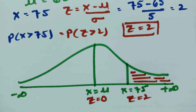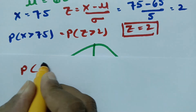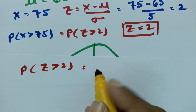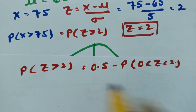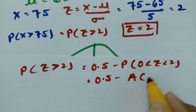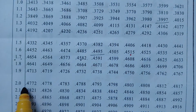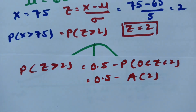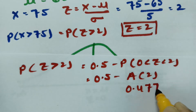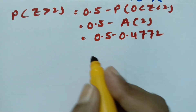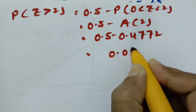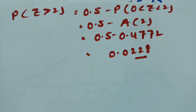So P(Z > 2) = 0.5 minus the probability of 0 < z < 2. From the z-table, the area for z = 2.00 is 0.4772. Therefore, P(Z > 2) = 0.5 - 0.4772 = 0.0228.